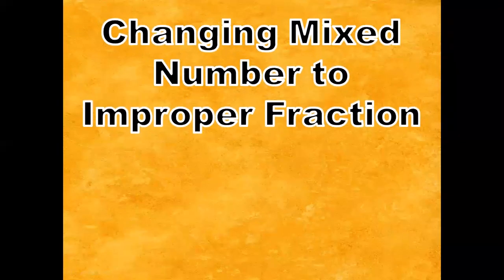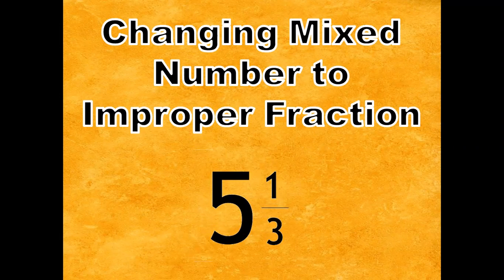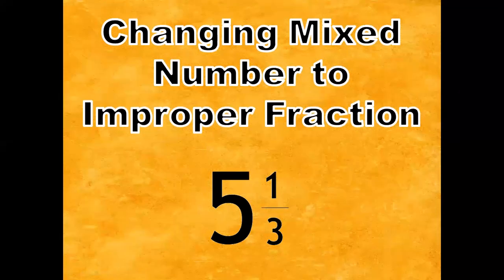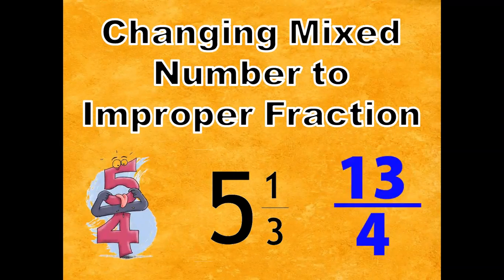Good morning. For today's video, our topic is changing mixed numbers to improper fractions. Five and one-third is a mixed number. It is composed of five as the whole number and one-third as a proper fraction. Five-fourths and thirteen-fourths are examples of improper fractions because their numerator is greater than the denominator.